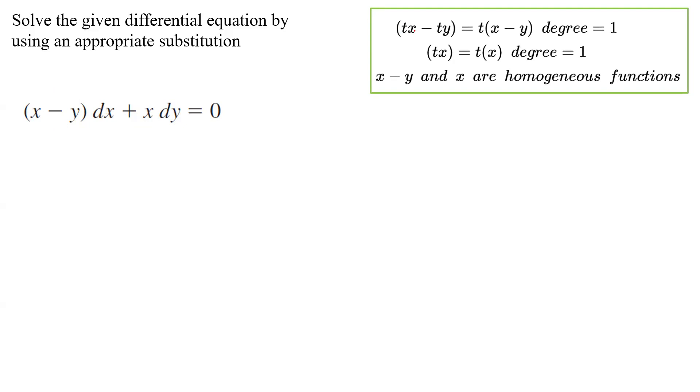If I substitute tx for x and ty for y, we can factor out t and the exponent is 1. The degree is 1, so x - y is a homogeneous function. Also x: if you substitute tx for x, we can factor out t and multiply it by x. The degree is 1. We can easily conclude that x - y and x are homogeneous functions.